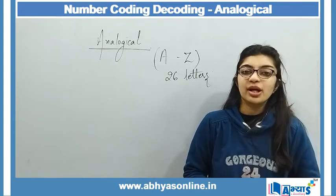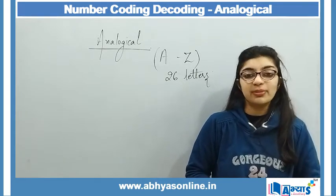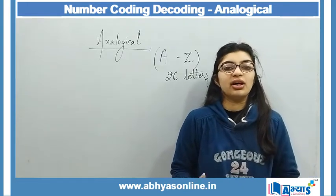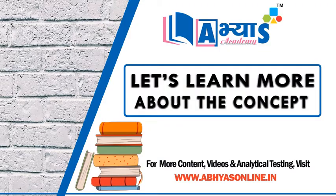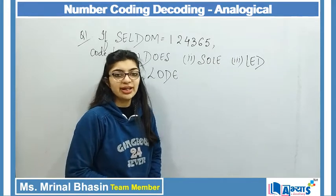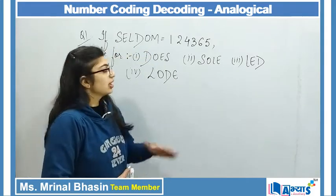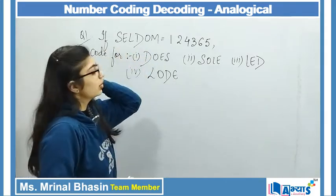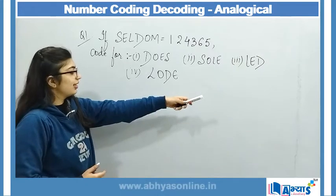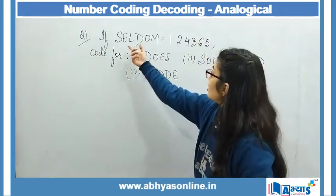So let us begin with question number 1, because we will get explanations with questions and this concept will be more clear. Let's directly move to questions. The first question is: SELDOM — S-E-L-D-O-M. Seldom's corresponding code is 124365. Let us look at this code in a chart.